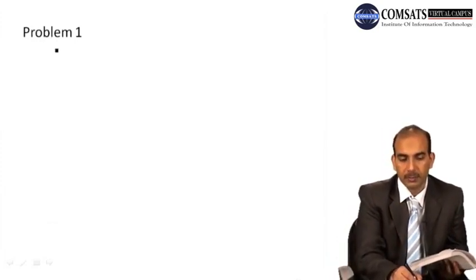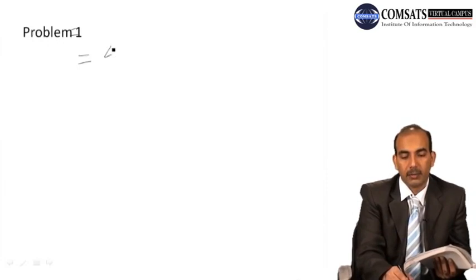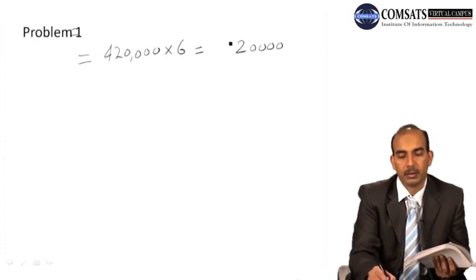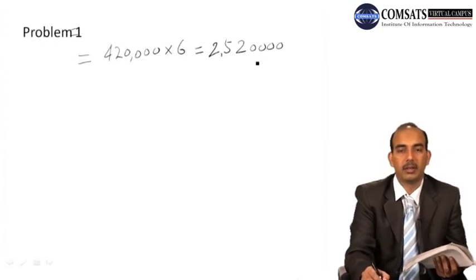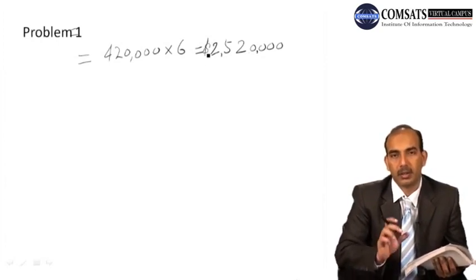We calculate it here: $420,000 per day for six days equals $2.52 million tied up during this time period.